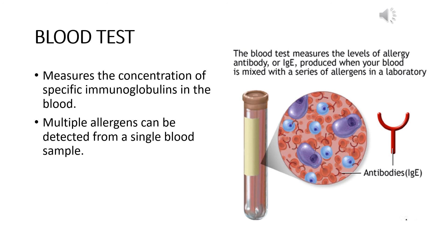Multiple allergens can be detected from a single blood sample. If the blood sample is treated with different allergens in different portions and the person is allergic to some particular allergen, that sample of the blood will have immunoglobulin, and from that we can conclude that this person has an allergy to that particular allergen. We measure the concentration of the antibody or the immunoglobulin IgE which is produced when the blood is mixed with series of allergens in a laboratory. The blood test is always better than the skin prick test because it is a quantitative test and it measures the specific amount of immunoglobulin, making it a more determinative step.